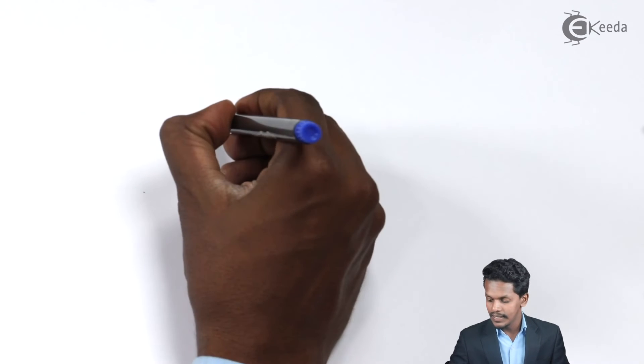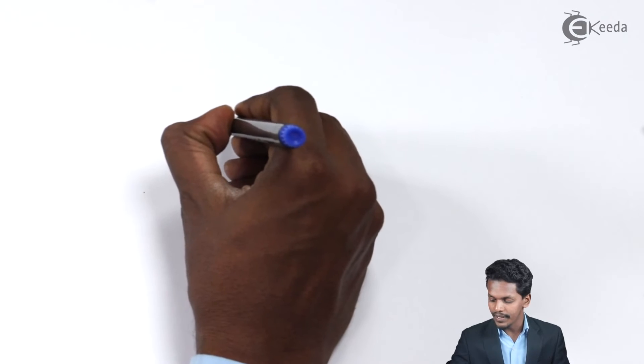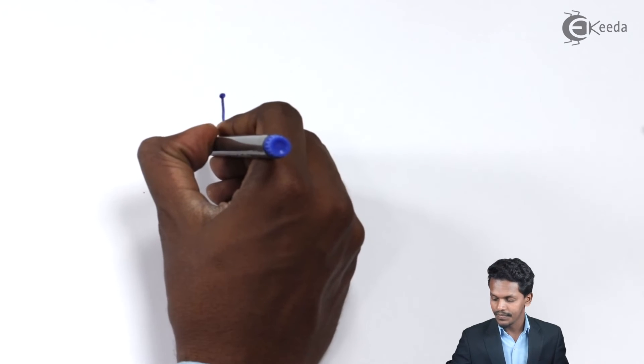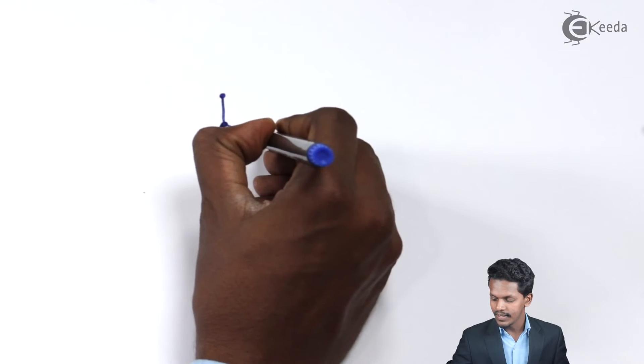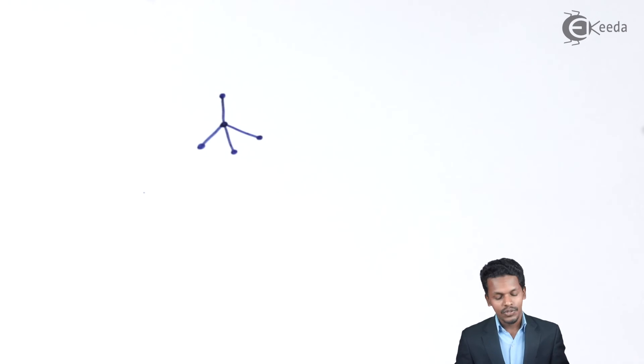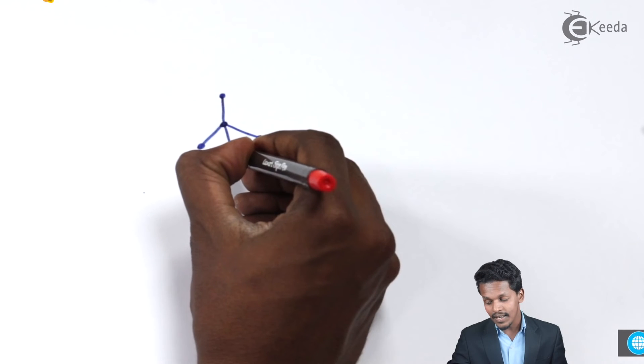Talking about the structure of carbon, suppose I consider this to be the carbon atom. It is surrounded by 4 other carbon atoms. This is 1, 2, 3, and 4.